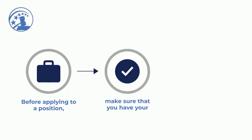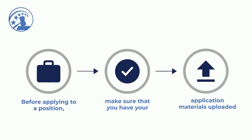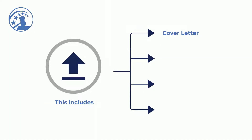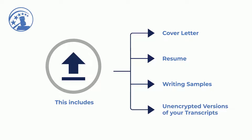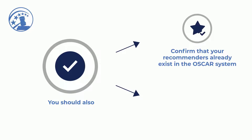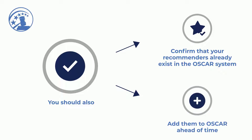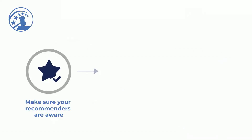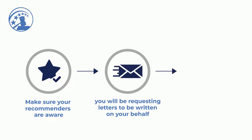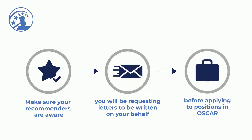Before you apply to a position in OSCAR, make sure that you have your application materials uploaded and ready to go. This includes a cover letter, a resume, writing samples, and unencrypted versions of your transcripts. You should also confirm that your recommenders already exist in the OSCAR system, or add them to OSCAR ahead of time, and make sure your recommenders are aware you will be requesting letters to be written on your behalf before applying to positions in OSCAR.